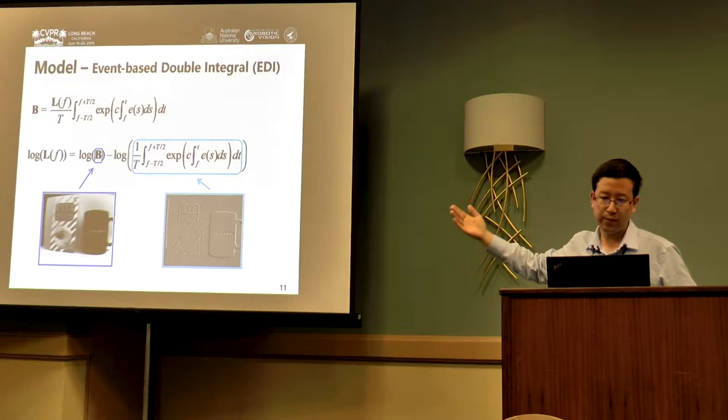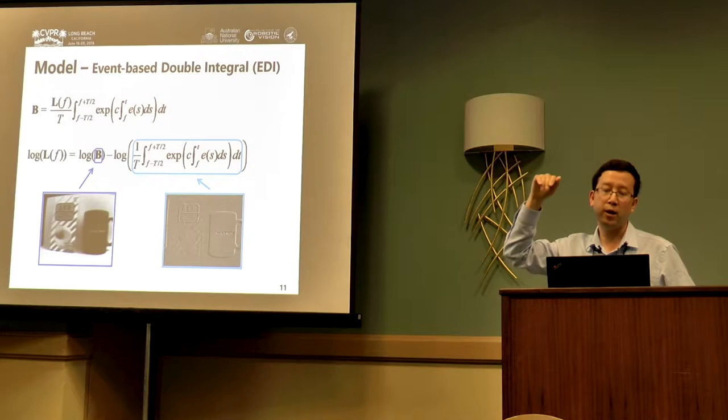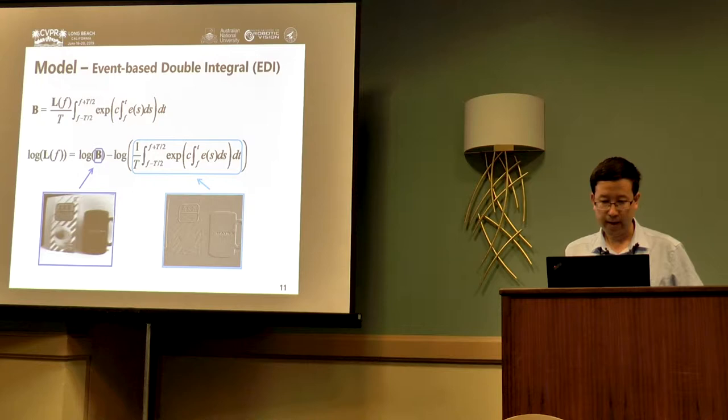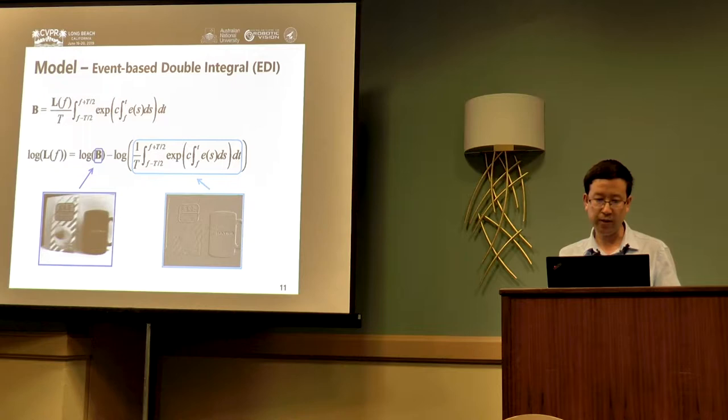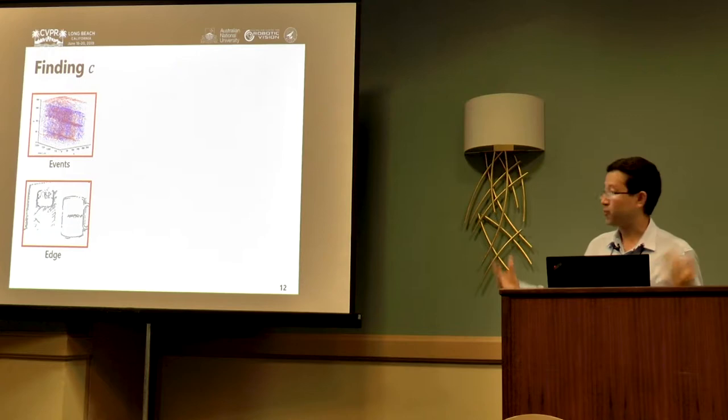Then the question is how do we get it? Here we define our event-based code called the double integral model, which means we integrate twice and get this relation between the observed blurry image and the event data. If we can estimate C properly, we could recover the clean latent image and transform this blurry single frame to high frame rate video. This is the key idea.